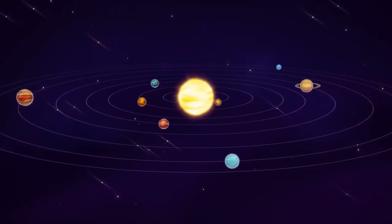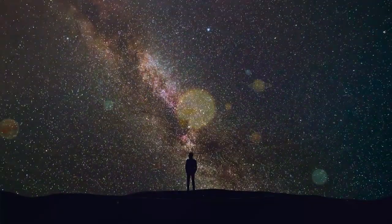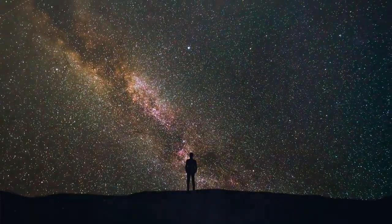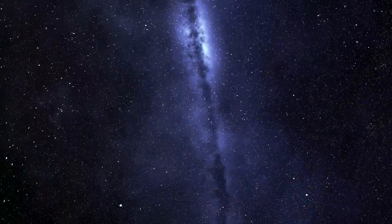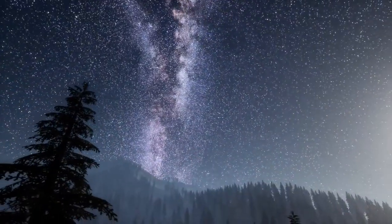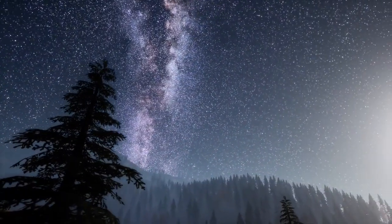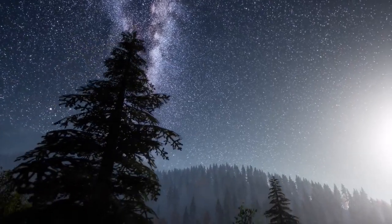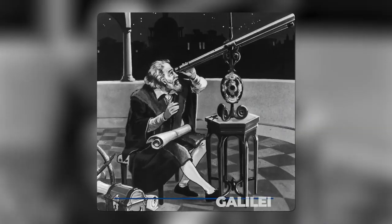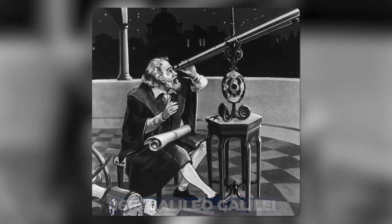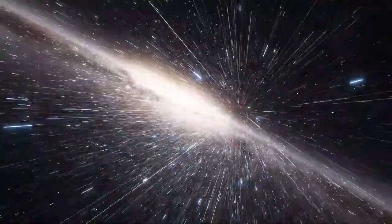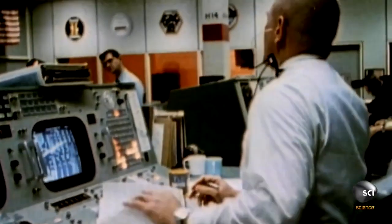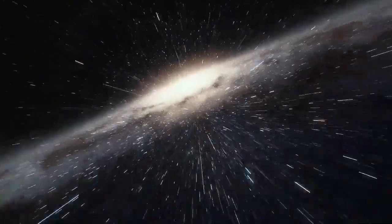Our solar system is part of the Milky Way Galaxy, so named because of how it looks from Earth. The Milky Way emerges in the night sky as a hazy stretch of light. Because the Milky Way's disc-shaped structure is obscured from view, it appears as a narrow band when viewed from Earth. In 1610, Galileo Galilei used his telescope for the first time to resolve this band of light into individual stars.